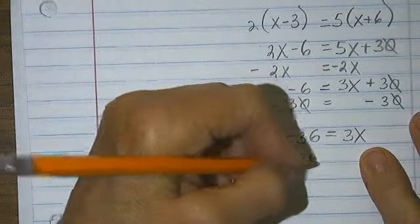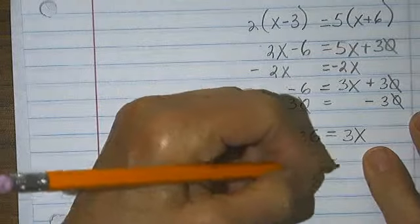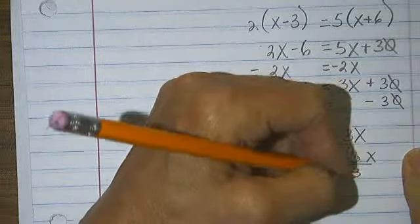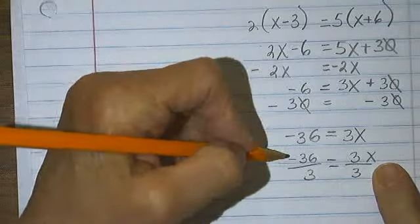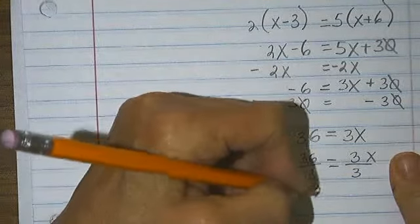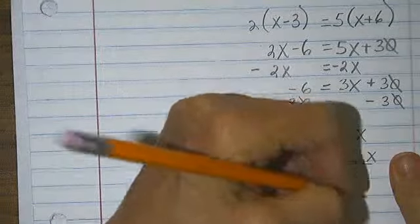Negative 36 divided by 3 is equal to 3 over 3 times x. Negative 36 divided by 3, negative 12 is equal to x.